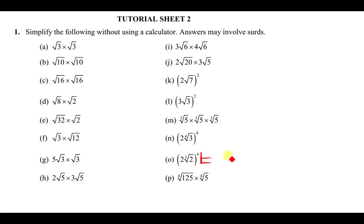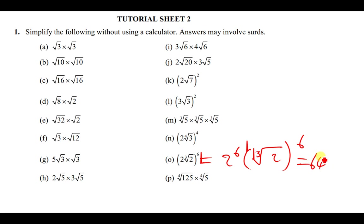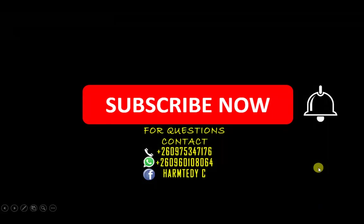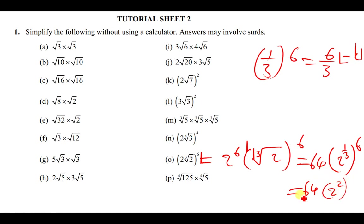For (2·∛2)⁶: distribute to get 2⁶ × (∛2)⁶ = 64 × (2^(1/3))⁶ = 64 × 2^(6/3) = 64 × 2^2 = 64 × 4 = 256.